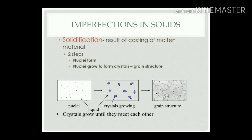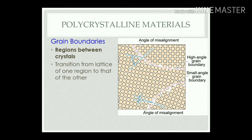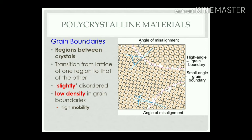After a certain time in the solidification process, the nuclei grow and finally convert into grain structures. Crystals grow until they meet each other — one nucleus meets a neighboring nucleus, which meets its own neighbors, forming a grain structure. One grain size differs from another and they are separated by grain boundaries, giving a final structure of grains and grain boundaries. Grain boundaries are the regions between crystals, representing a transition from the lattice of one region to another, with slight disorder and low density.